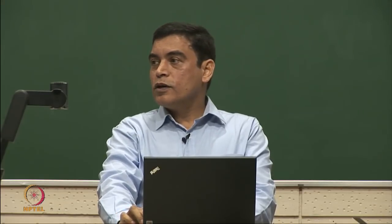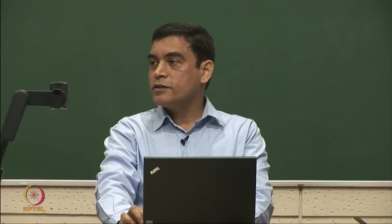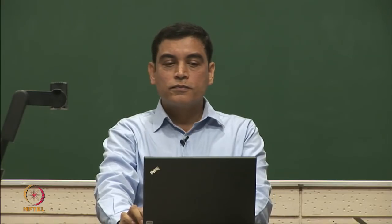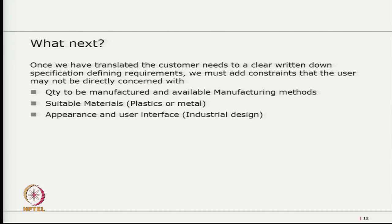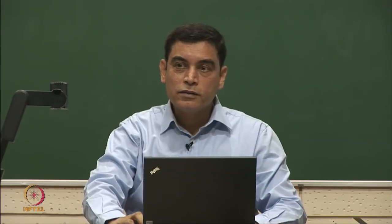The end user never told us the product has to be manufacturable — we are adding those constraints now. We consider suitable materials like plastic, metal, or fabric, and also appearance and user interface. Most home appliances have simple on/off controls, fan speed, or temperature settings. We also need to understand what the customer is looking for in an air purifier that he has not stated, and the constraints that will make it a marketable product.